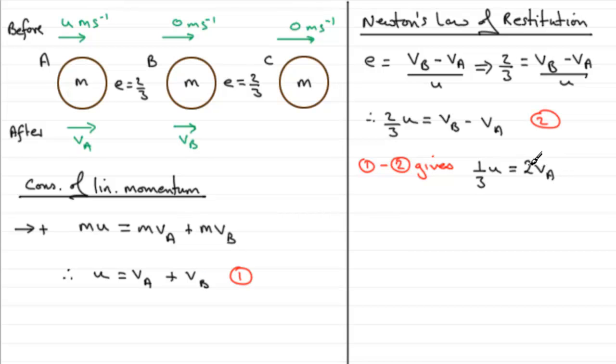If we now divide both sides by two, we end up with va equals one-sixth u. So that means the speed of A is going to be one-sixth u. We now need to get the speed of B, and we can do that by substituting this value back or by doing equation one plus two.